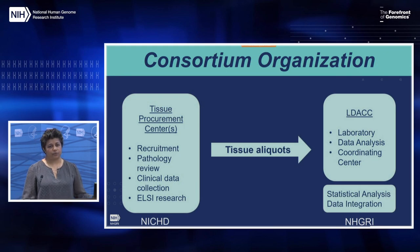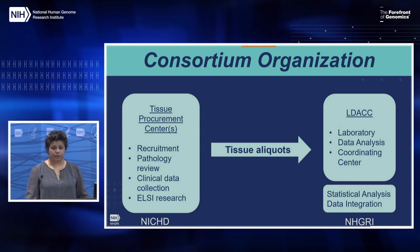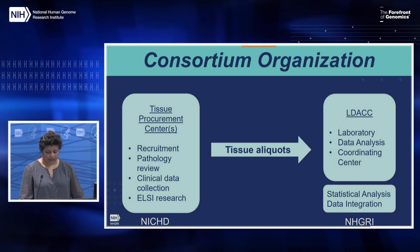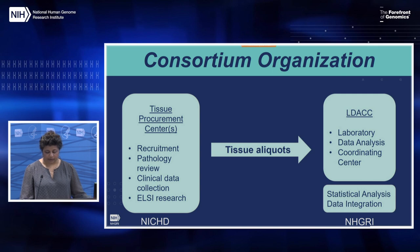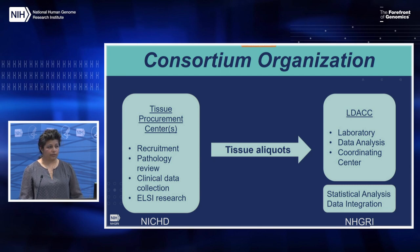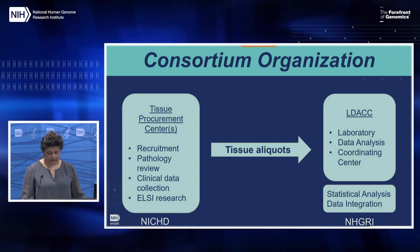This is the basic consortium model. The goal of DGTEX is to create a resource database to study gene expression across developmental stages. NICHD will manage the tissue procurement centers, responsible for recruitment of donors, building off the inclusion-exclusion criteria that GTEx developed. Pathology of tissue samples acceptable for collection will be leveraged from protocols developed by adult GTEx. Clinical data and ethics research will assess attitudes and perspectives of tissue donation from various stakeholders. Tissue aliquots will then be sent to the LDAC — the Laboratory Data Analysis and Coordinating Center — and NHGRI will manage the LDAC and the Statistical Analysis and Data Integration.